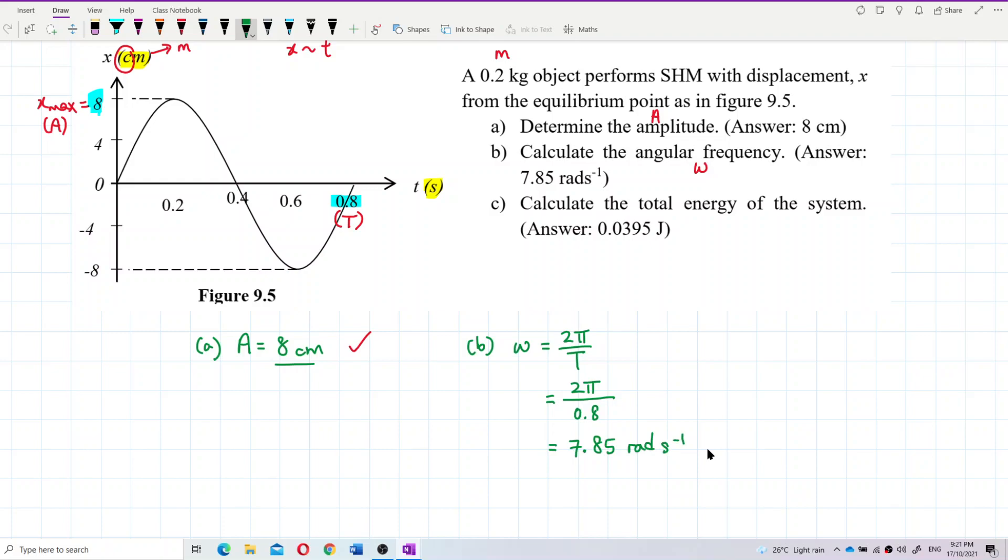Or you can just write as per second because radian is not an SI unit. Radian is not an SI unit. But if the question just focus on omega, I think it's better you write radian per second. It's better you write radian per second. Sometimes the answer just give as per second. But if you specifically ask omega, you just give the answer in radian per second. It's better. 7.85 radian per second. That's correct.